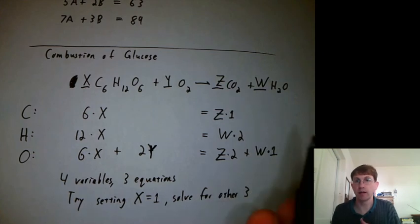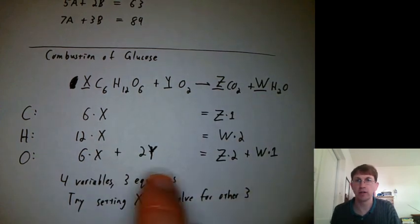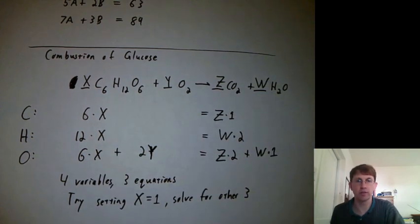Try setting X equals one, solve for the other three using some kind of matrix solution method. So that's a nice analogy between what we're doing in partial fractions, kind of grouping and saying like terms should equal each other, and a more physical chemistry kind of process.